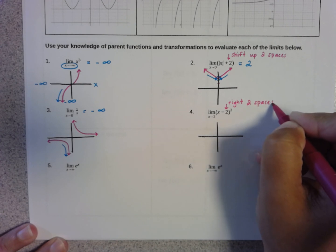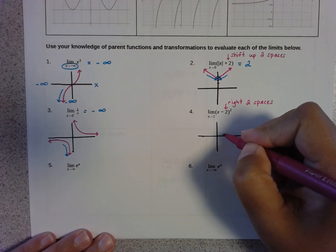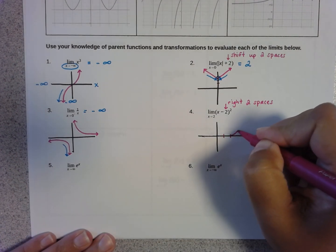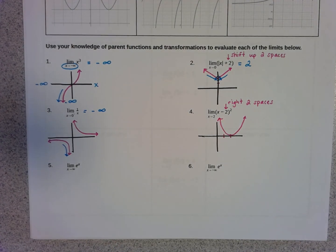If this said plus 2, I would actually be going left two spaces. Now my x squared function is a parabola, so it's going to look like this, but just shifted to the right two spaces.